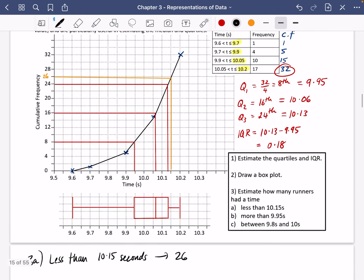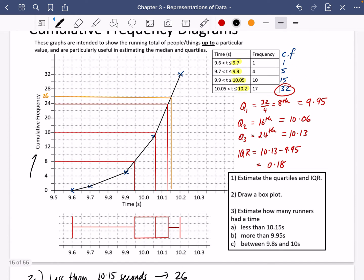Now we want more than 9.95. Remember, the cumulative frequency always tells you the value up to that particular time. So let's find out how many of them had less than 9.95 seconds and then use some reasoning there. So 9.95 seconds has actually already really been drawn on and it comes across at 8.